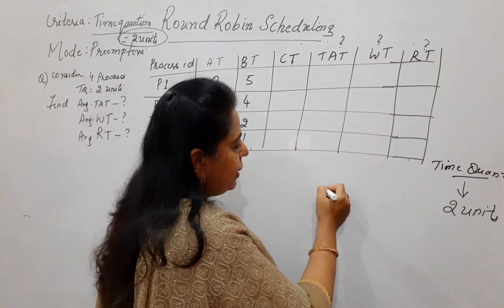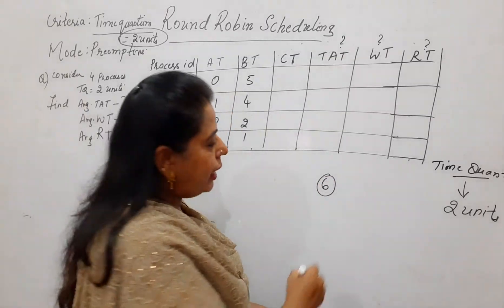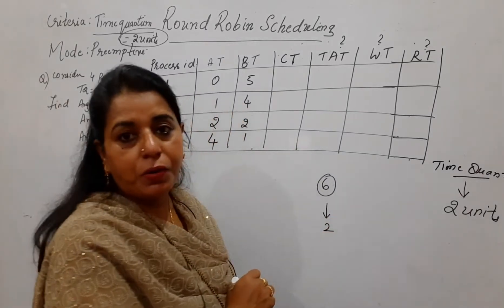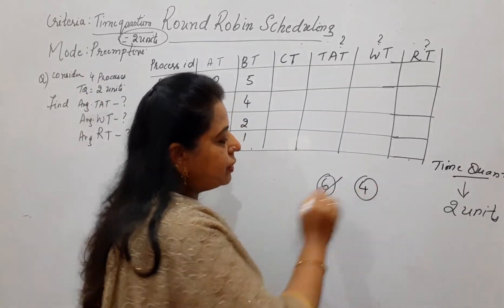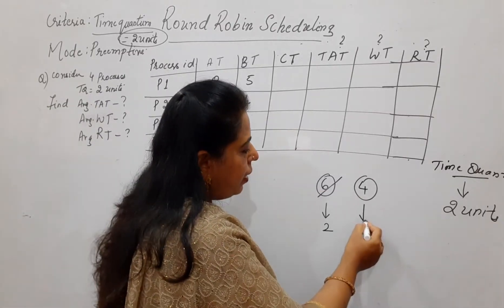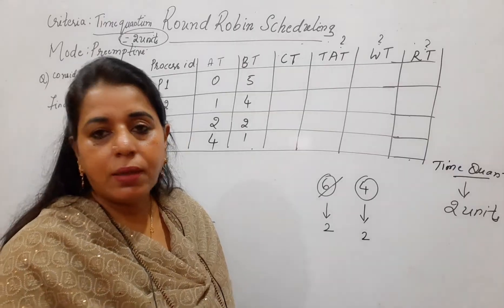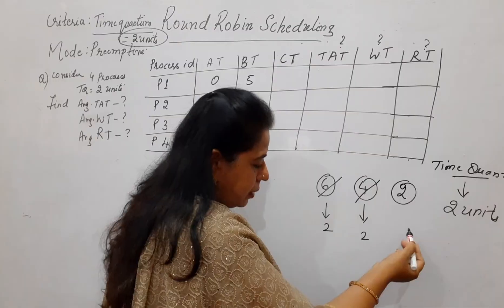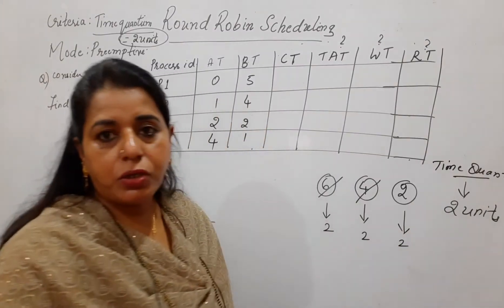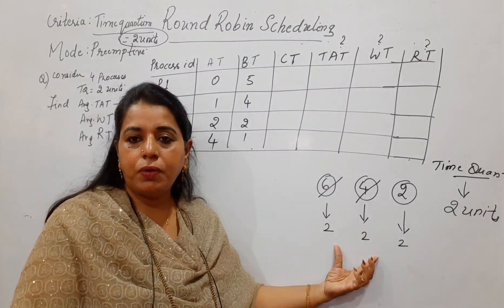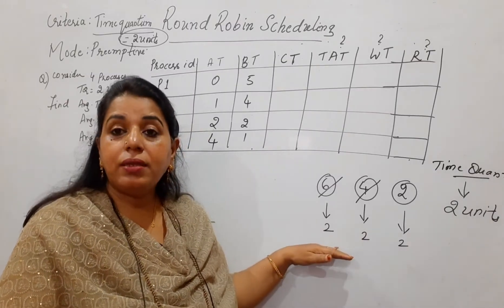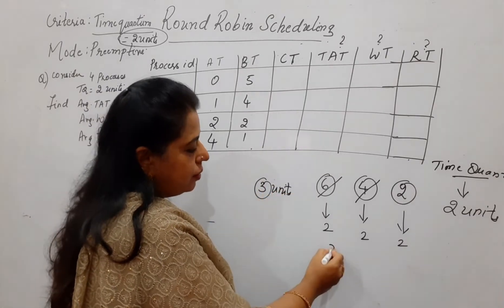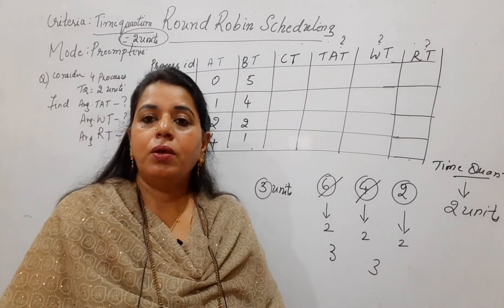For example, if the burst time of a process is six units and the time quantum given is two units, then the process will be scheduled only for two units. Its remaining burst time is four units still pending. When its turn comes again, it will be scheduled for the next two units. The remaining units are kept track of, and when its turn comes again for the third time, it will complete its job. So with time quantum of two units, it completes in three stages. If the time quantum given is three units, then it completes in two stages.